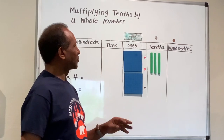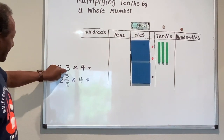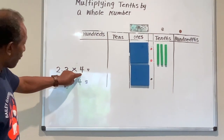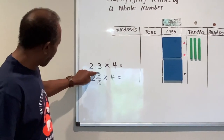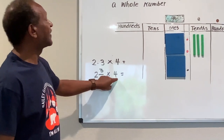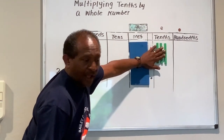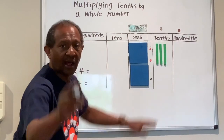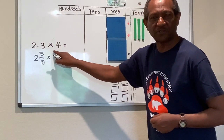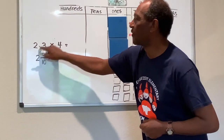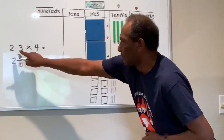Let's practice one more: multiplying tens by a whole number. Here is the example: two and three-tenths times four, or four copies of two and three-tenths. I will draw a picture — four groups of two and three-tenths.